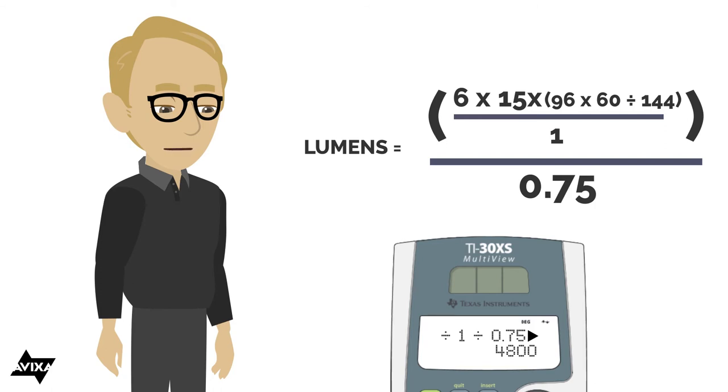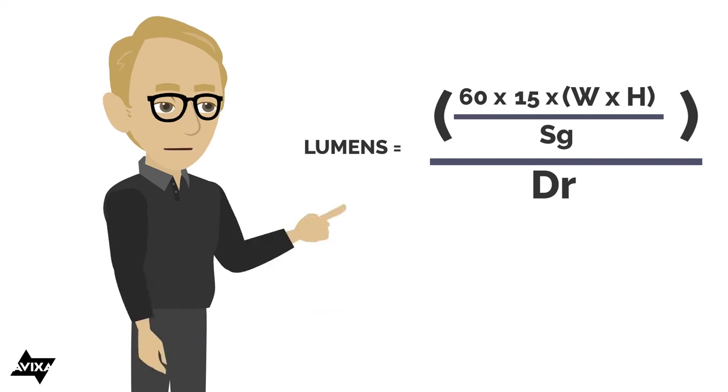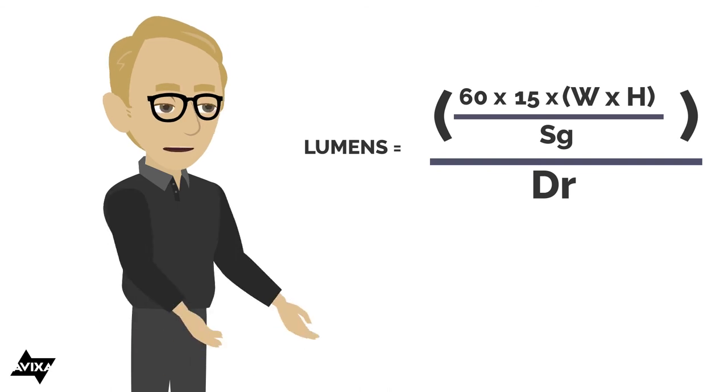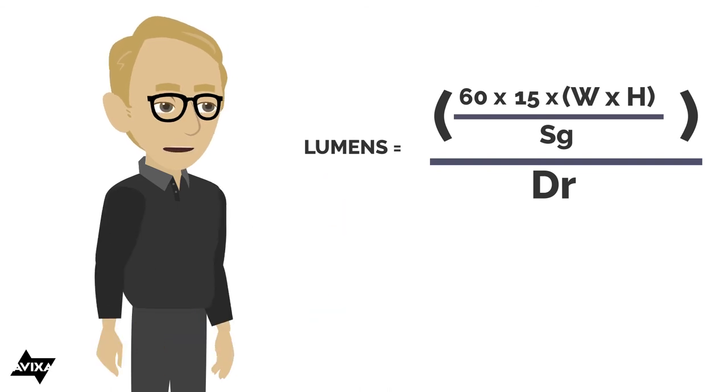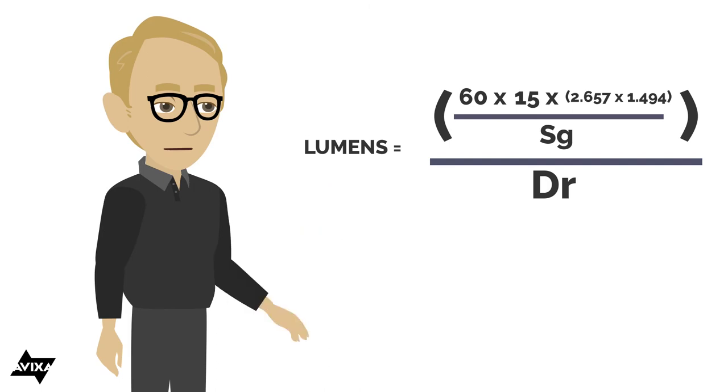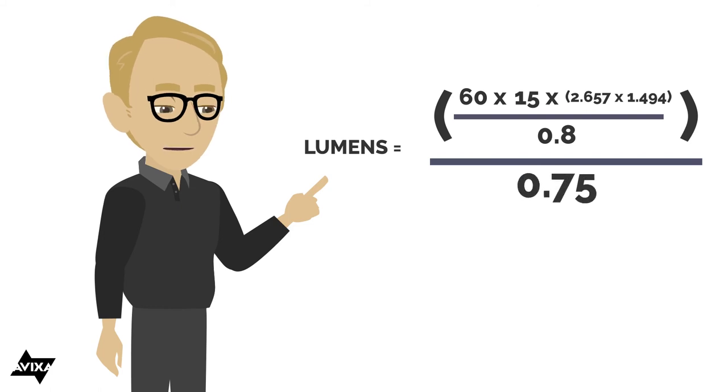Let's do this in metric. So again, I've expanded the width and height here. So we're going to do metric, we're going to do lux instead of foot candles. Let's start off with an ambient light that was measured of 60 lux at the screen location. Still, we're going to use the 15 to 1 contrast ratio and it was specified as 2657 millimeters by 1494 millimeters. We're just going to move the decimal point 2.657 meters by 1.494 meters. And let's do a screen gain of less than one. Let's say this has a screen gain of 0.8. So divide by 0.8 because it's a gray screen and then divide still by the derating percentage of 0.75.